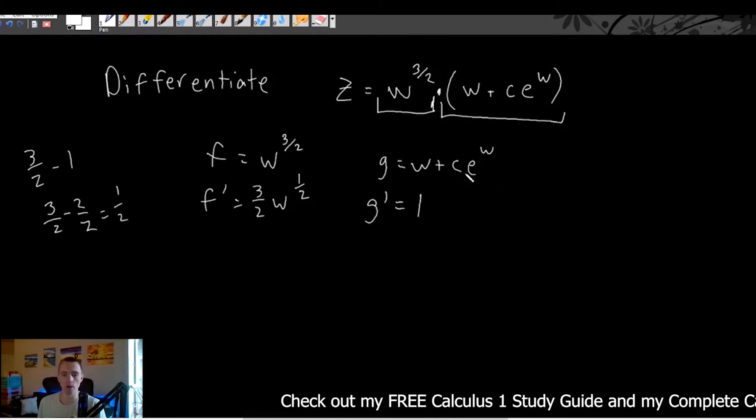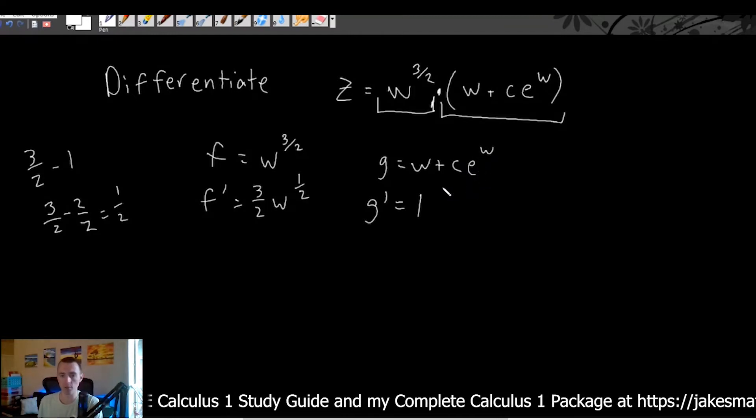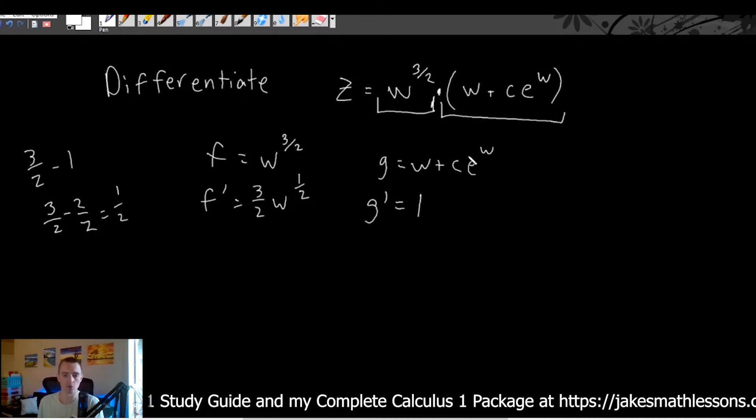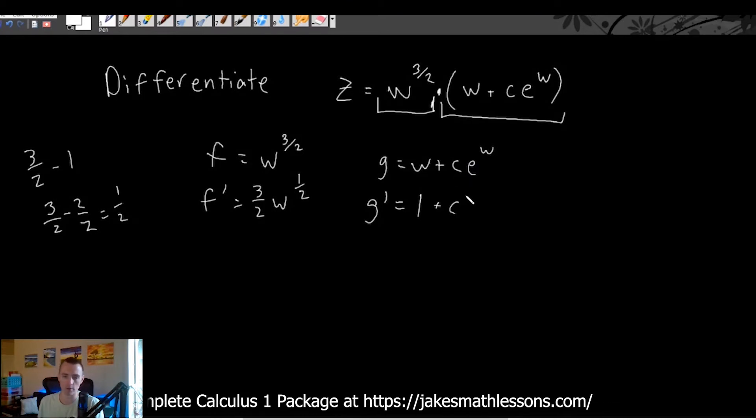And then kind of like we ran into in the last example, the derivative of e to the x or e to the w is just e to the w, right? And whenever you have a constant times some function, the derivative of a constant times a function is the same as that same constant times the derivative of the function.